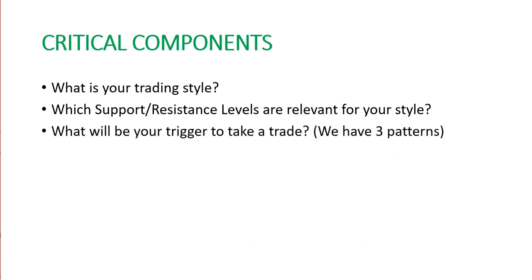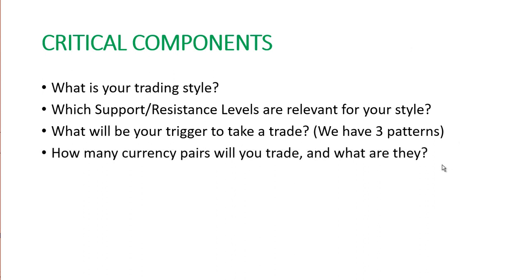Now we get into the trigger for a trade — what's going to make you take a trade? You have to have a way to say, okay, we're at a level of support — what's going to make me get in that trade? What we do is we have three distinct patterns, and these patterns need to appear at one of our key levels in order for us to take a trade. One thing that's really important: figure out which pattern you see really easily, pick the one you see easiest, and trade that. You only need to trade one thing to do well with trading.